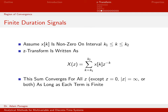We know this sum converges because we're only adding up a finite number of things. As long as each term — X of K times Z to the minus K — is finite, we'll end up with a finite sum, because a finite addition of finite things is a finite quantity.